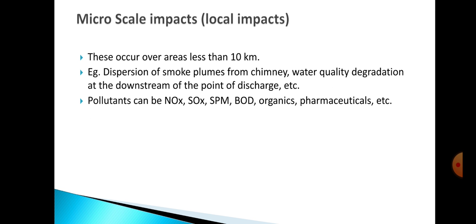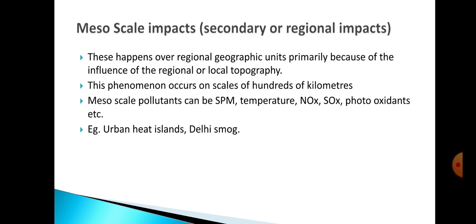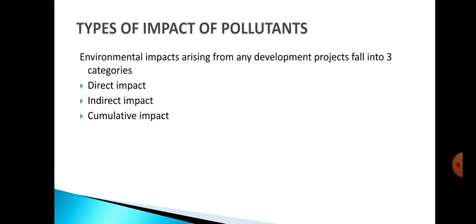Micro scale impacts are local impacts that occur over a very small area — less than 10 kilometers. Examples include dispersion of smoke or fumes from chimneys and water quality degradation especially at the point of discharge of waste into water bodies. Pollutants at this scale include oxides of nitrogen and sulfur, particulate matter, biological oxygen demand, organics, and pharmaceuticals. These are the different scales of impact — covering both the types of impact and the scale of impact.